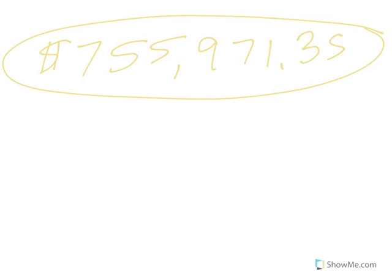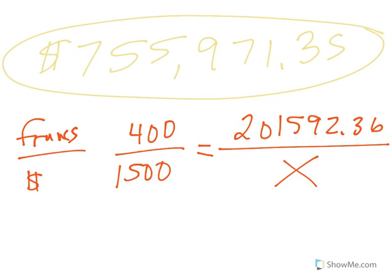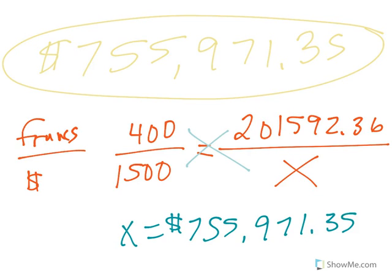Now, you could have also done this a little bit differently. You could have set it up as a proportion, where if you can say, if we have francs on top, and dollars on the bottom, if we know that 400 francs is the same as $1,500, then, and we know that in part A, we found 201,592.36 francs, how many dollars is that? Well, if you cross-multiply, you end up with 755,971.35. So, because you have a comparison, you could have done that one two different ways.